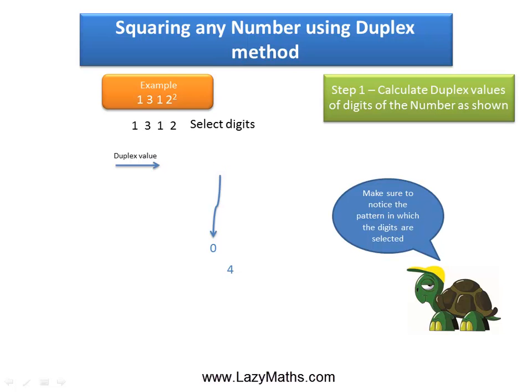The duplex value of the next digit or next set of digits in this case is 12. And the duplex value of 12 is 2 times 1 times 2 which is also 04 and we again write it down as it is.